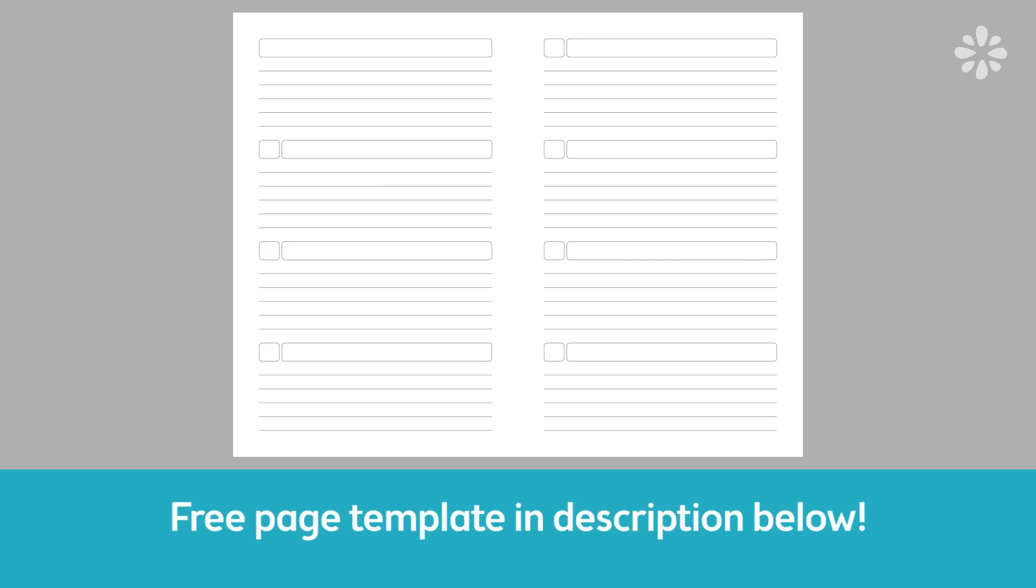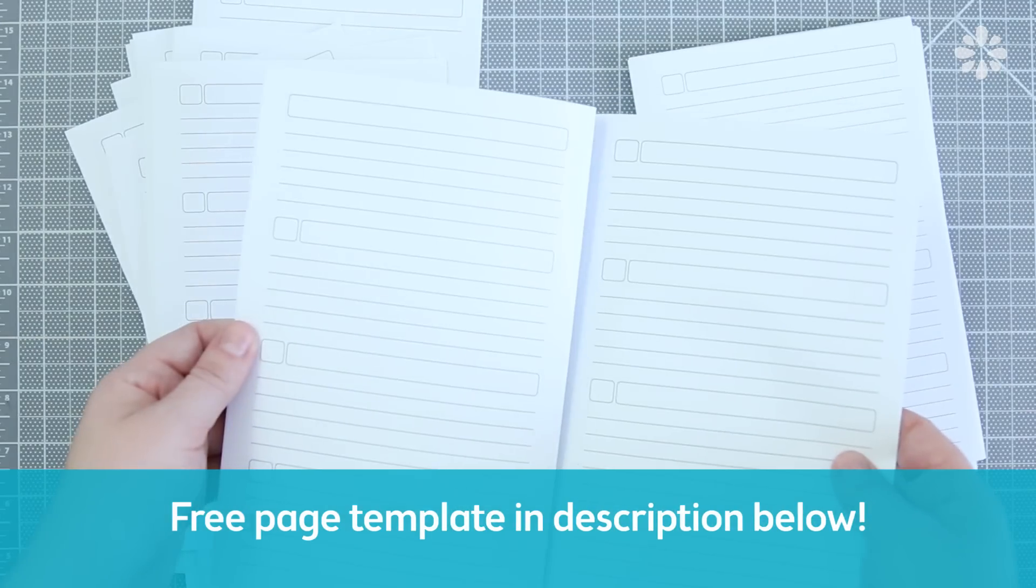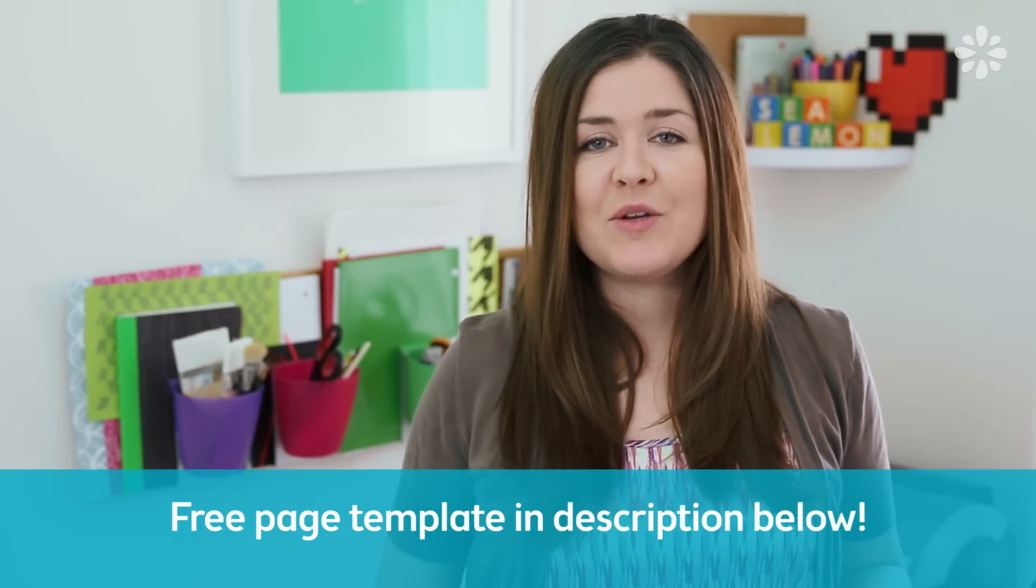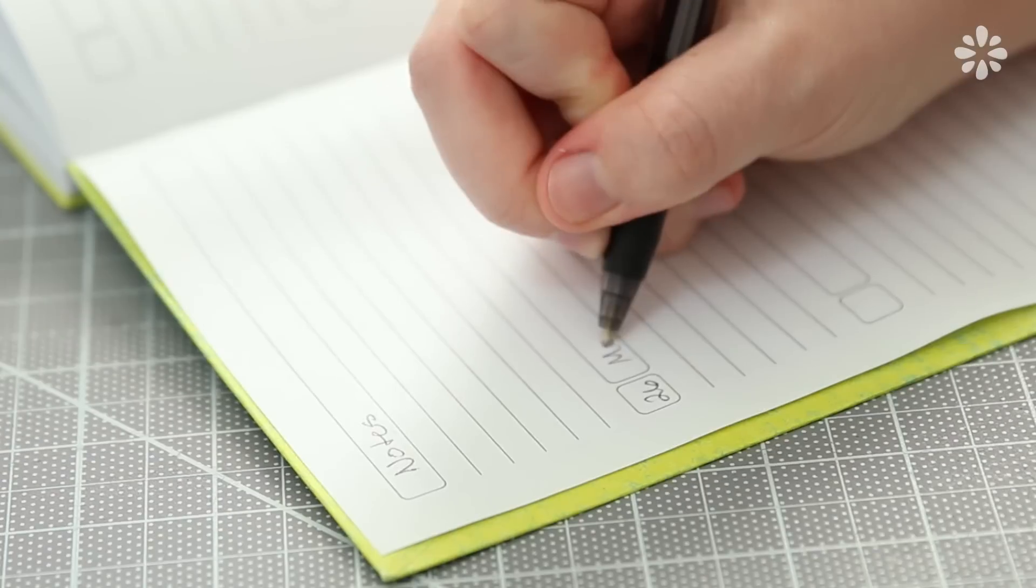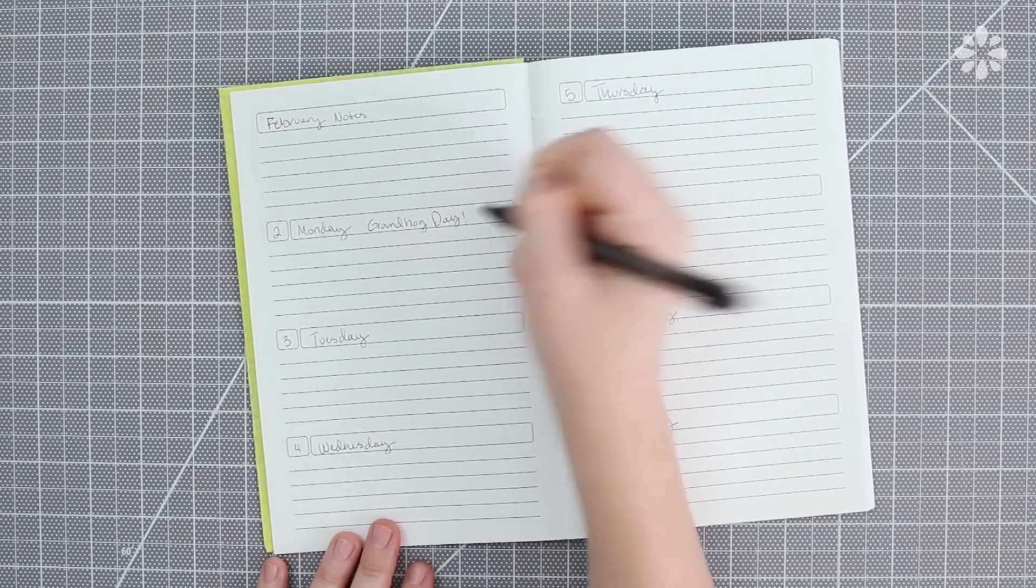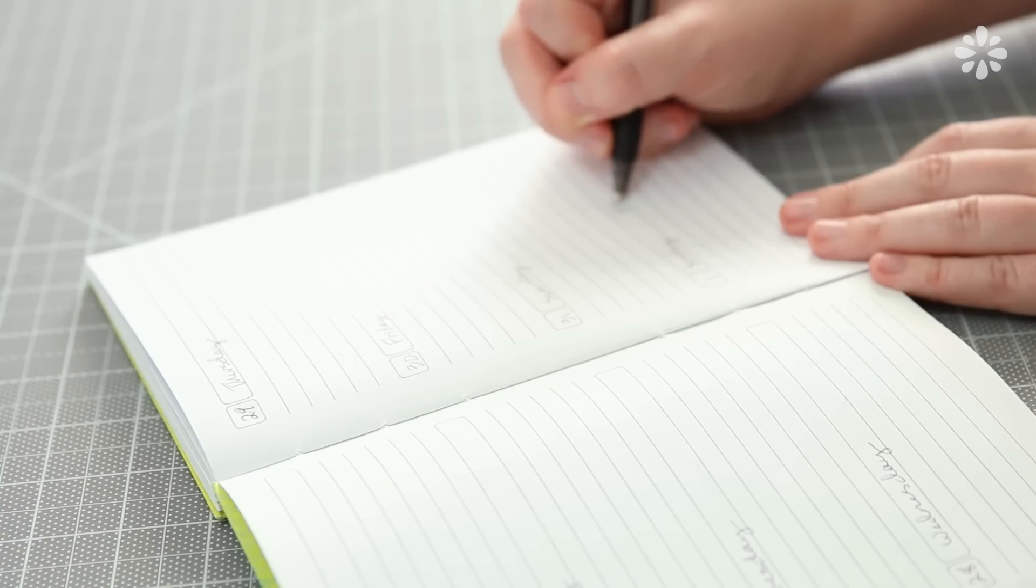This layout can be printed on both sides of your paper, and it can be folded into signatures. Each page has enough entries for one week, and you have enough room for notes. There's a spot for the date, and you're free to write the month or occasions anywhere you'd like. You will have to fill everything in, but this allows you to customize the look of your pages.